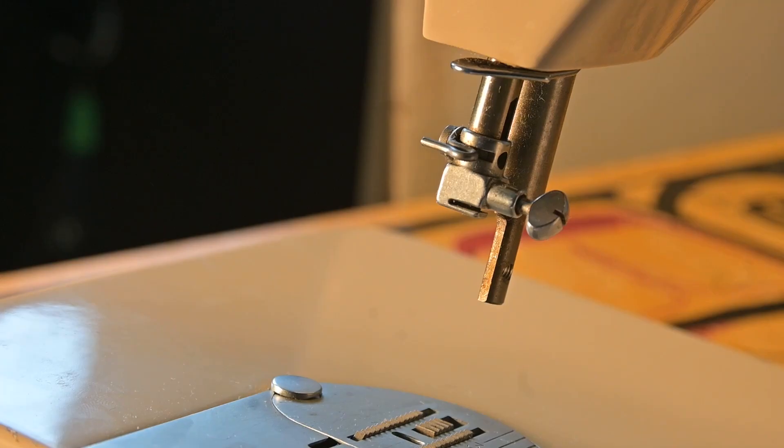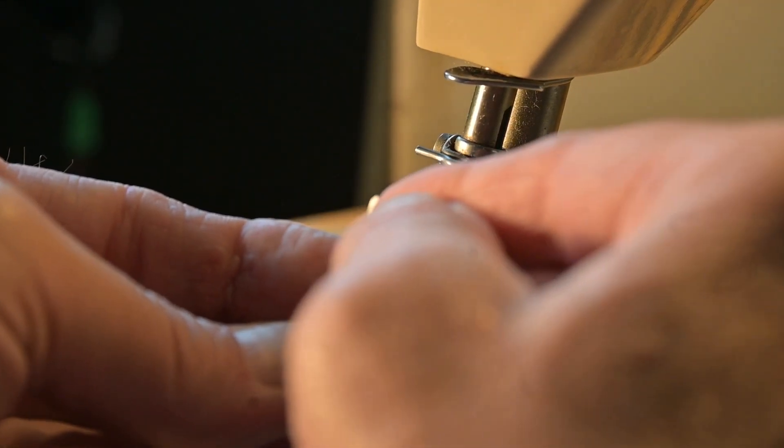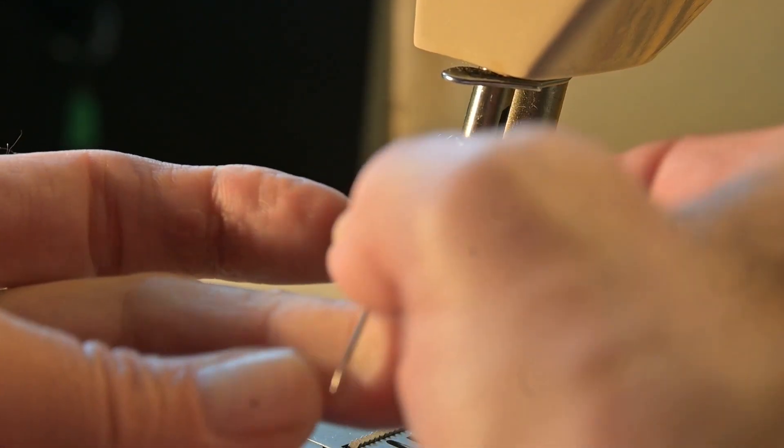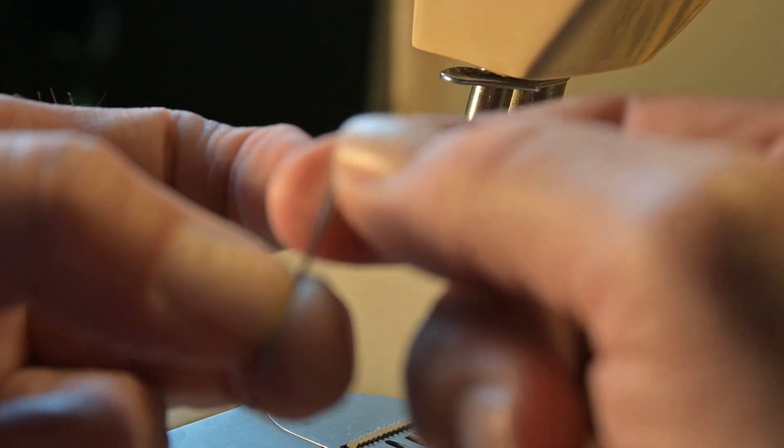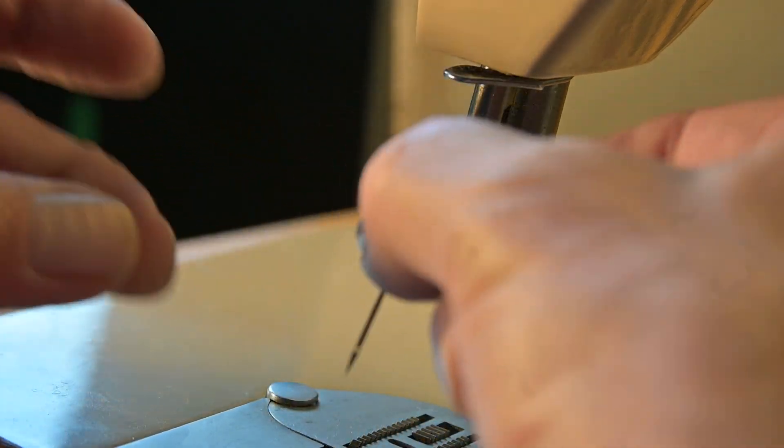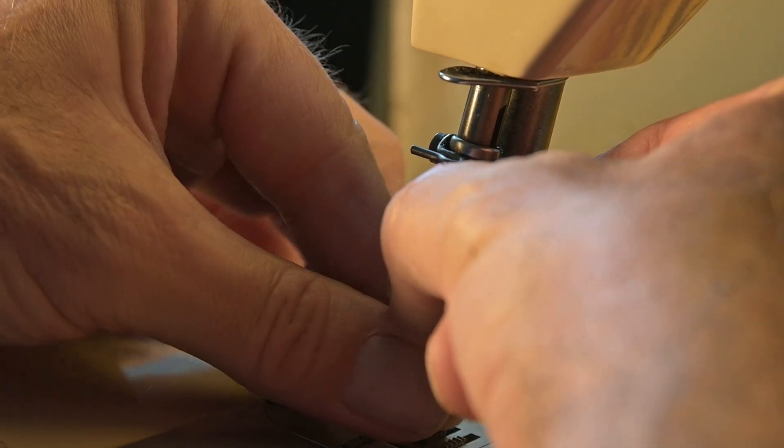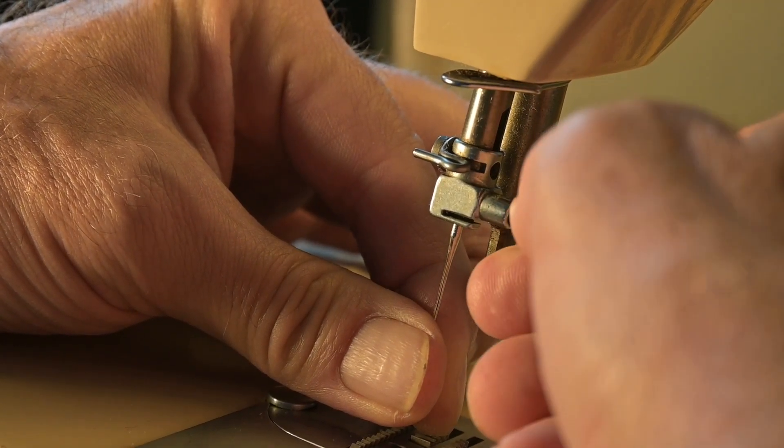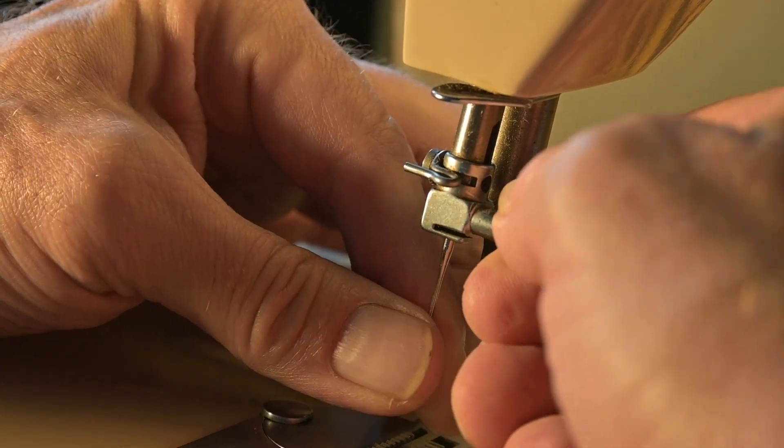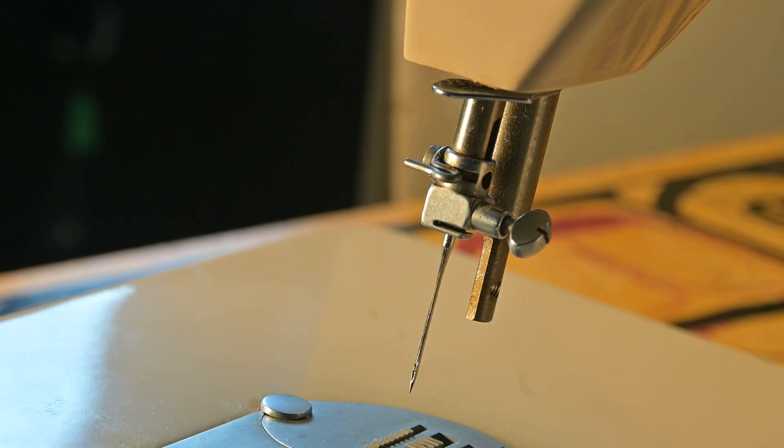So the next thing is to get a needle on there. We need to set the needle. In order to set the needle, we take the flat side of the needle, and that flat side goes to the back. It goes right in there, seated all the way up as high as it'll go, and then tighten the needle clamp. So now the needle is set.